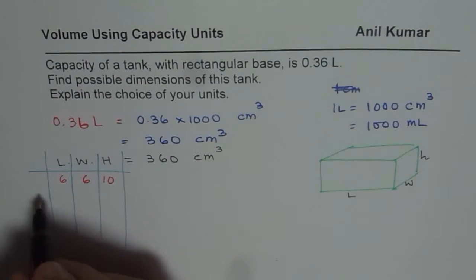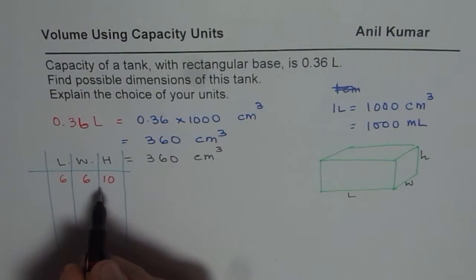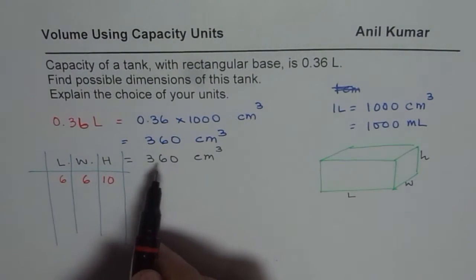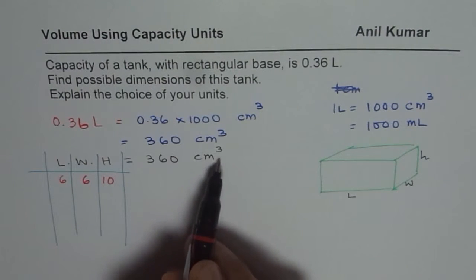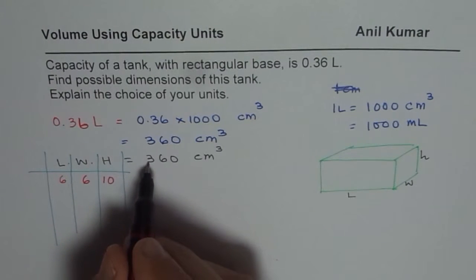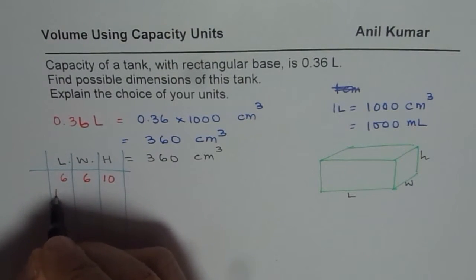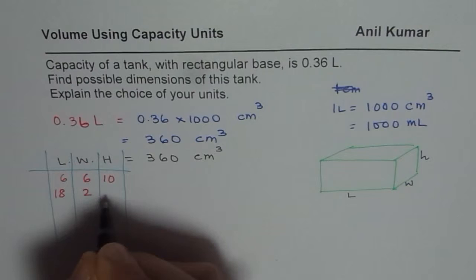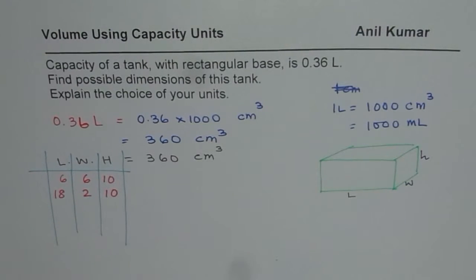So we could get many different dimensions which will give us 360 centimeter cube as the capacity. So we could write 36 also as 18 times 2, so 18 times 2 is 36 and then times 10. So we could get it like this also.